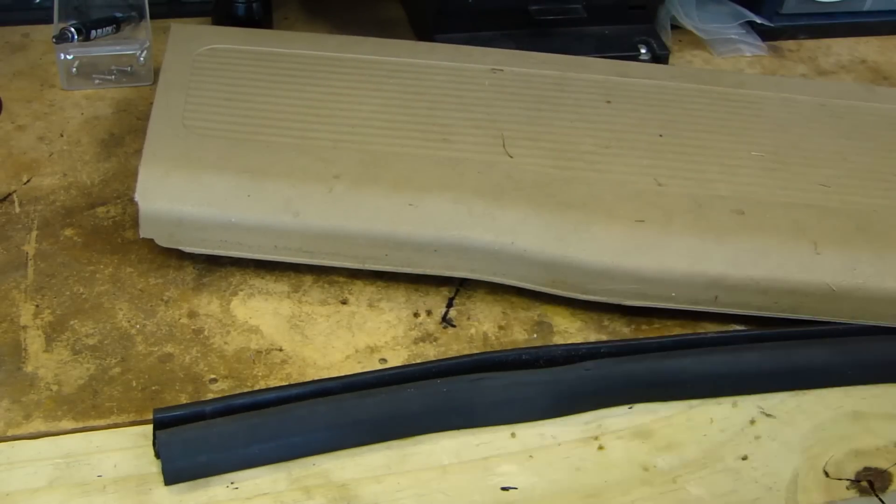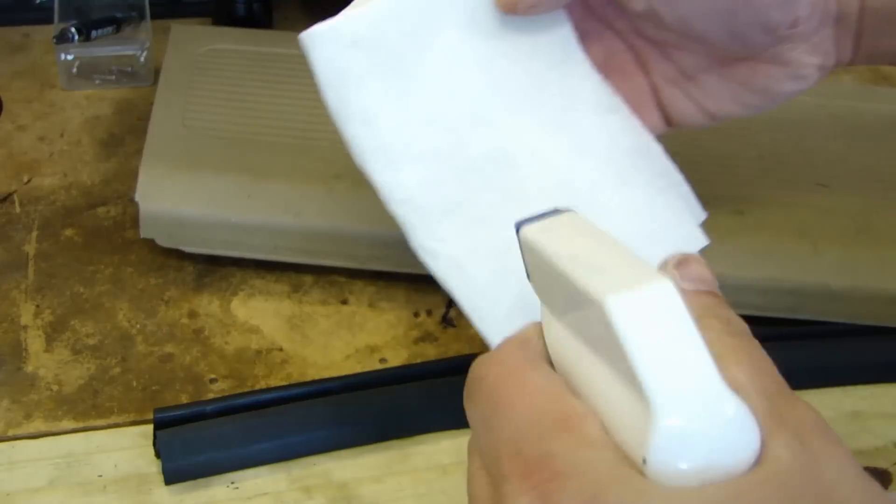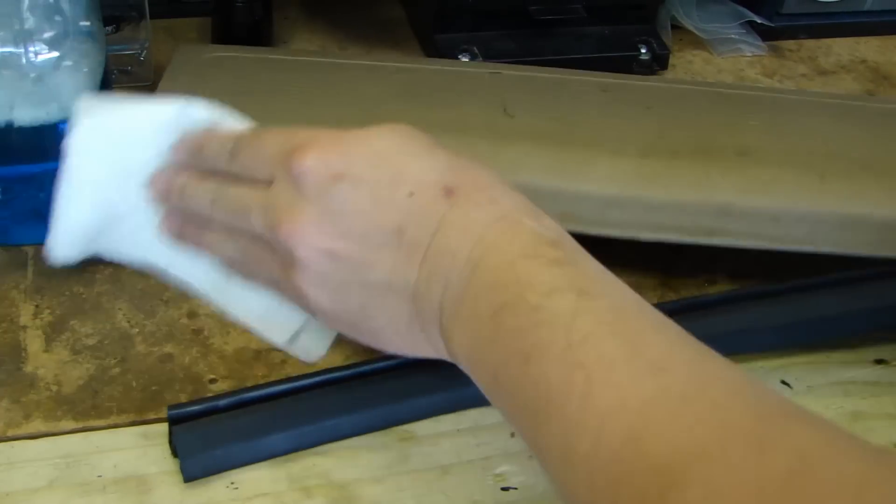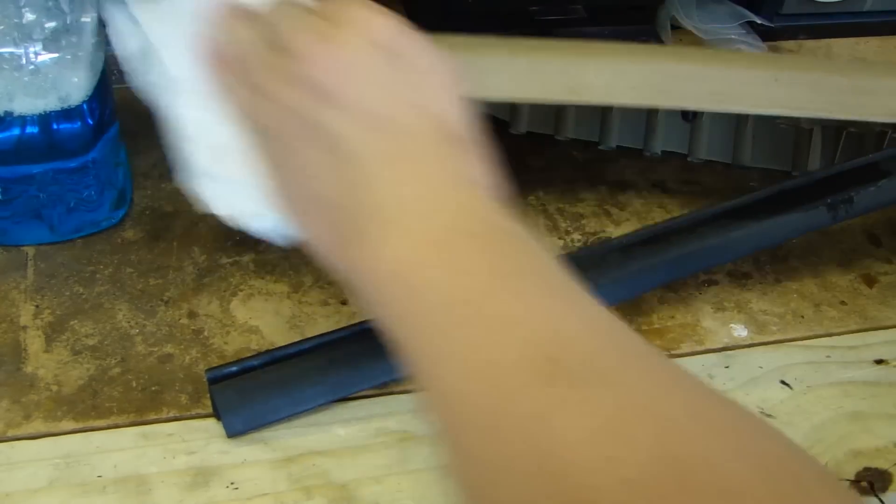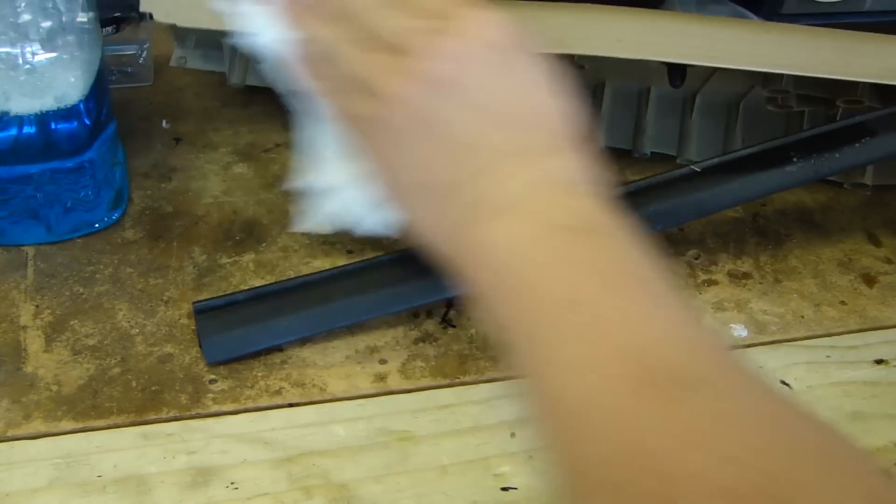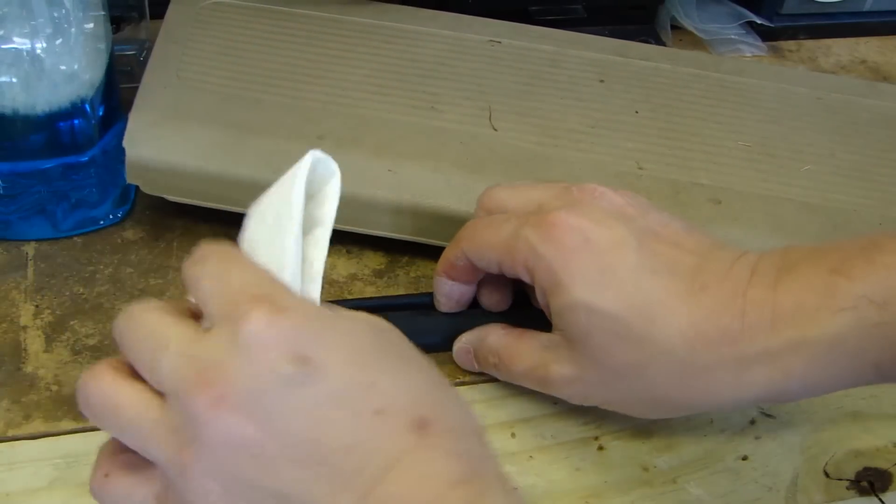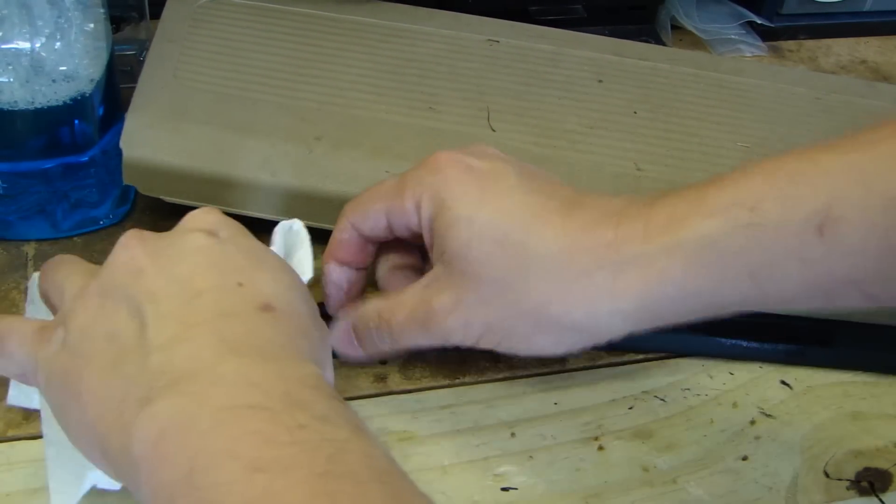The first thing you need to do is clean both surfaces. Just get yourself some Windex and a paper towel, and then just wipe this edge down. Do the same for the inside edge of this rubber molding.